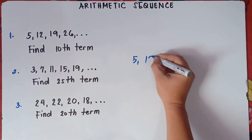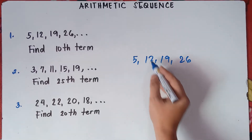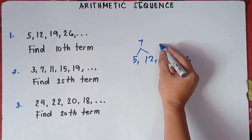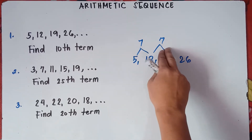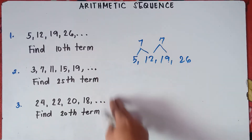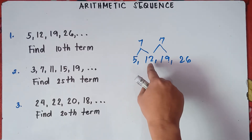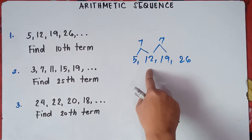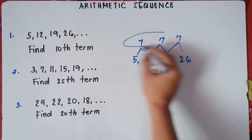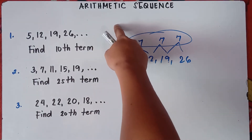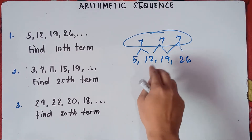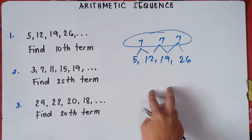To get the common difference, for example 5, 12, 19, 26 — simply subtract the second term minus the first term: 12 minus 5 is 7. Check the third term minus the second term; if it's the same — 7 — therefore the common difference is 7 and you are dealing with an arithmetic sequence. Be careful, because there are cases where subtracting consecutive terms does not give the same result, meaning you're not dealing with arithmetic sequence but perhaps geometric sequence.